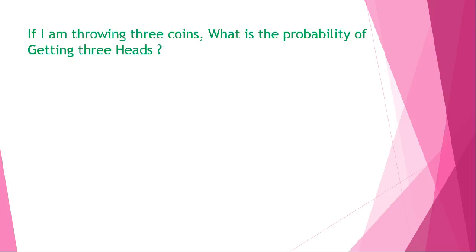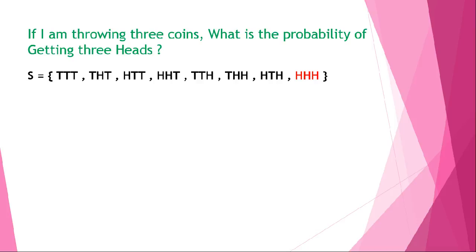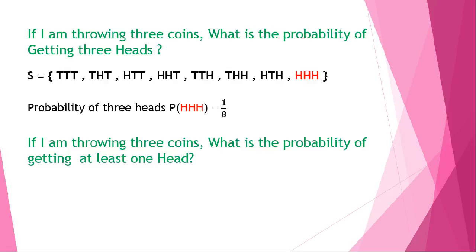Now we'll solve a question based on this concept. If I am throwing three coins, what is the probability of getting three heads? We know there is only one outcome with three heads, and the total number of outcomes is 2^3 = 8. The required outcome is HHH. So the probability of three heads, P(HHH), is 1/8 — one desirable outcome divided by eight total outcomes.